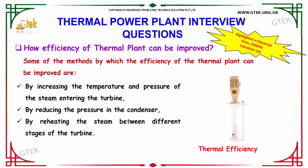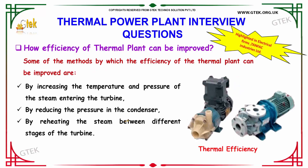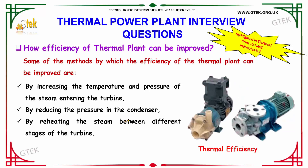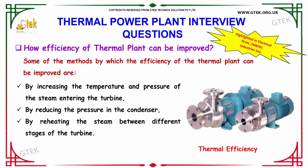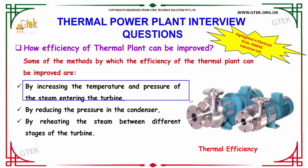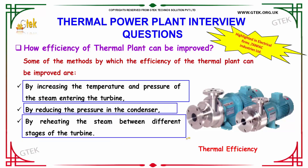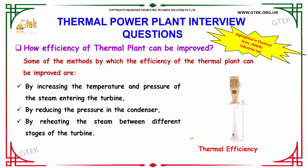How can the efficiency of a thermal plant be improved? It can be improved by increasing the temperature and pressure of the steam entering the turbine, by reducing the pressure in the condenser, and also by reheating the steam between different stages of the turbine.